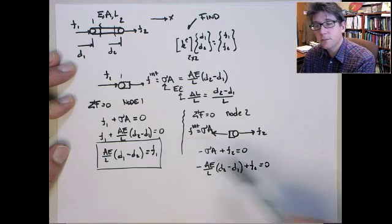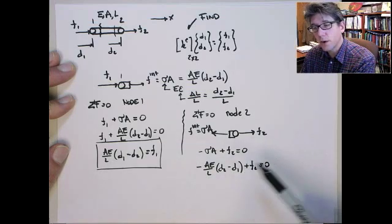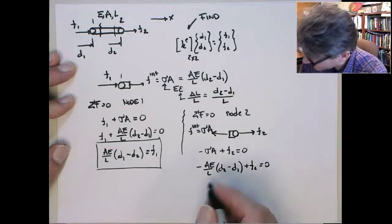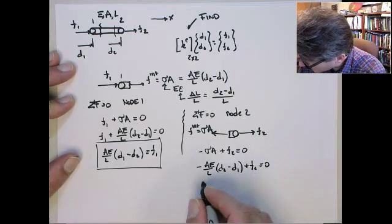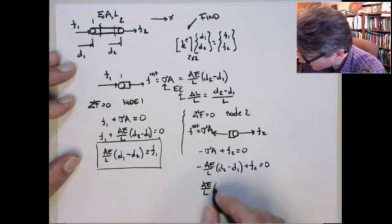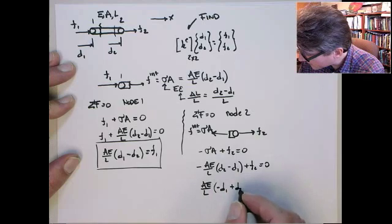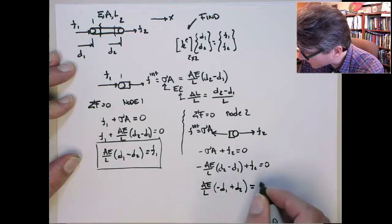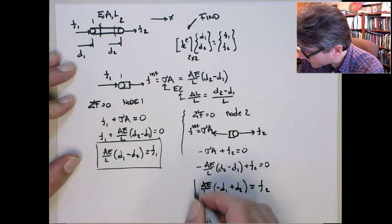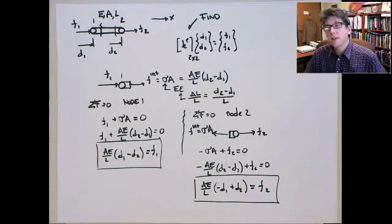Now we'll get into the same form here. Let's bring F2 to the right-hand side, and then we'll multiply by minus 1 to get the F positive. We get AE on L minus D1 plus D2 equals F2. So that's the force balance on the second node.